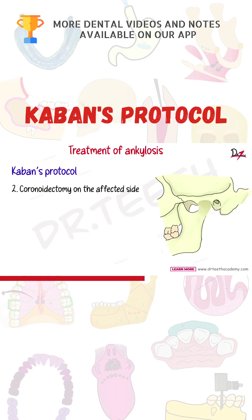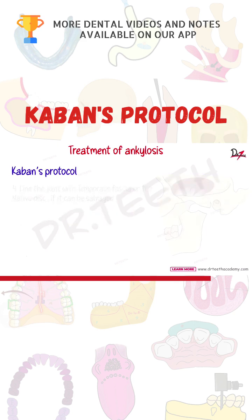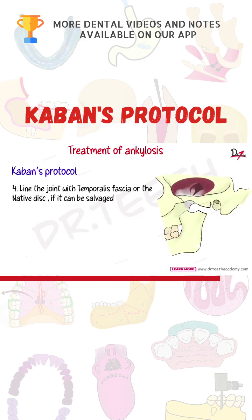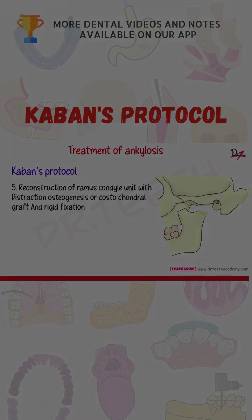After this, you may also have to do coronoidectomy on the opposite side if steps 1 and 2 do not result in a maximal interincisal opening of 35 mm. The fourth step is to line the joint with temporalis fascia or the native disc if it can be salvaged. The fifth step is reconstruction of the ramus.